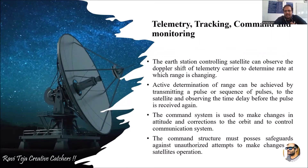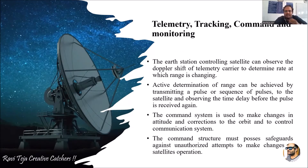The earth station controlling the satellite can observe the Doppler shift of the telemetry carrier to determine the rate at which the range is changing. Earth stations are stationary but satellites keep moving in their orbit. Whenever a transmitting unit keeps moving in an orbit and the receiver unit is stationary, there is a change in frequency with respect to the velocity of that object — this is the Doppler shift. Whenever a unit is transmitting a signal and keeps moving, the frequency of that transmitted signal keeps changing, and this also needs to be observed using earth station technology.